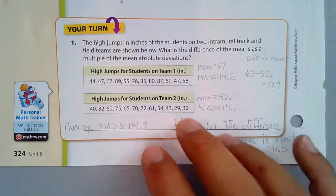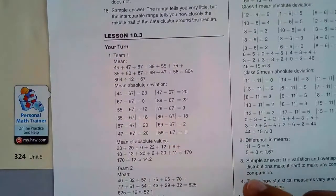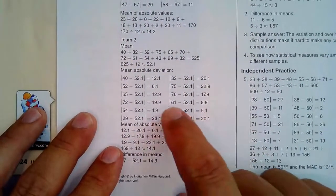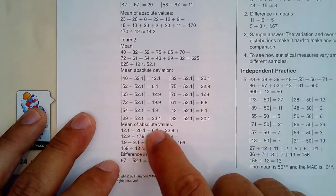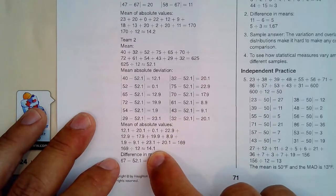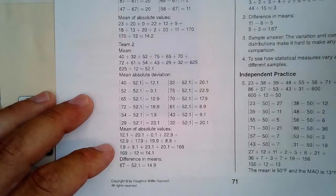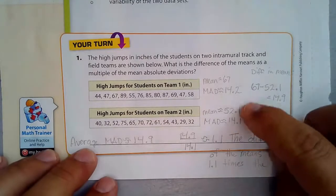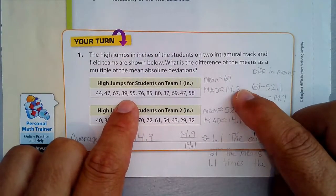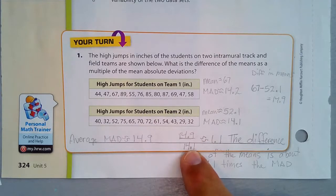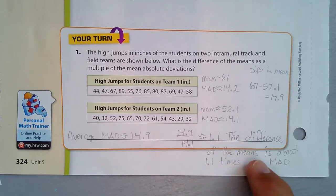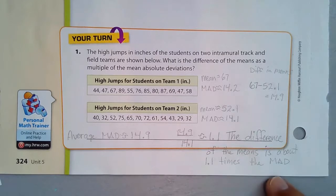Now I have to find the mean absolute deviations of each. The mean absolute deviation of one set is about 14.2 — I'll show you that right here. To get 14.2, you have to do all of this work. With 52.1 as the average, you compute all the distances, then take the mean of all those numbers to get 14.1. The other set's MAD is 14.2, so I used 14.1 in the final calculation. The difference of the means divided by the mean absolute deviation gives about 1.1. The difference of the means is about 1.1 times the MAD.